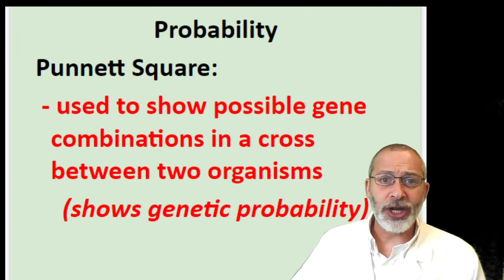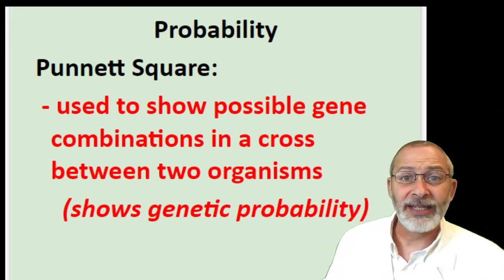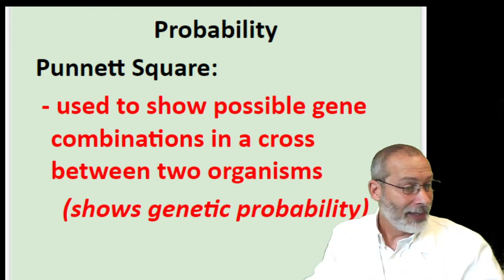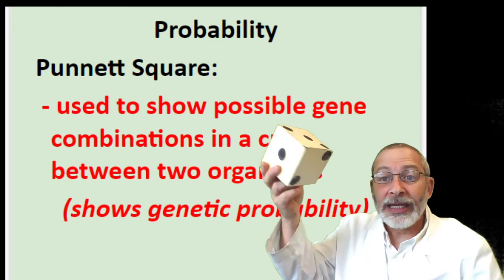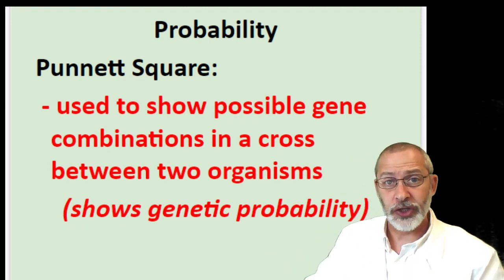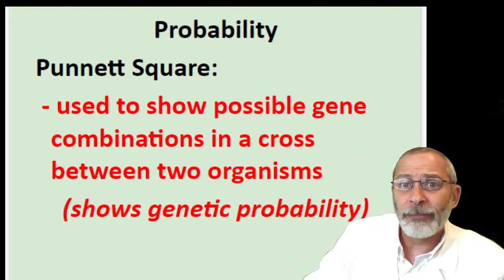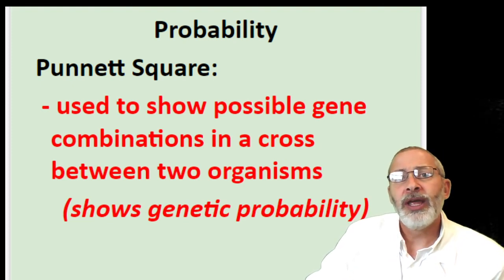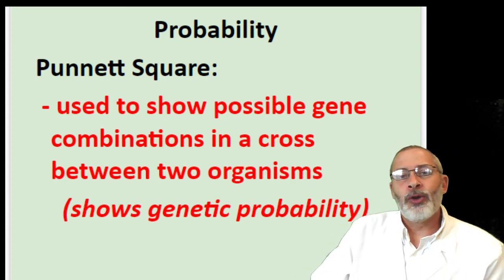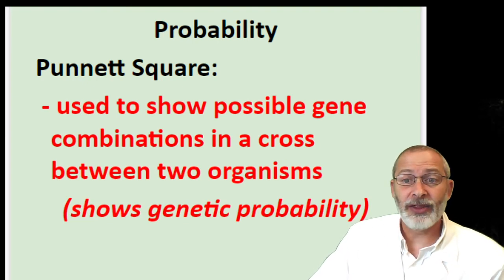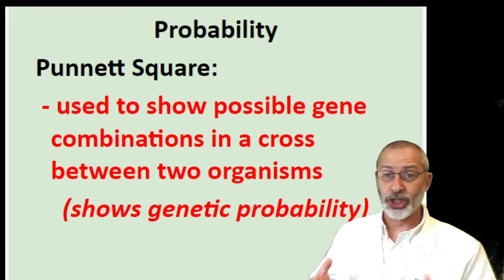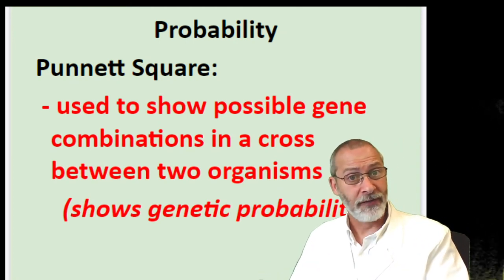Yesterday I shared with you some thoughts about probability. We looked at flipping a coin and rolling a dotted cube, and we talked about the probability of a certain outcome for both of those objects. Today we're going to learn how a geneticist uses a Punnett square to calculate the probability that two organisms will have offspring with certain genotypes as well as certain phenotypes.